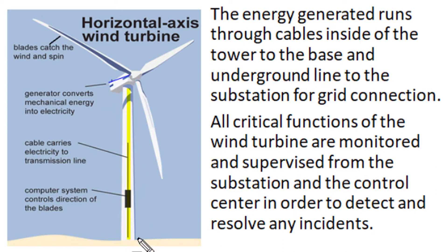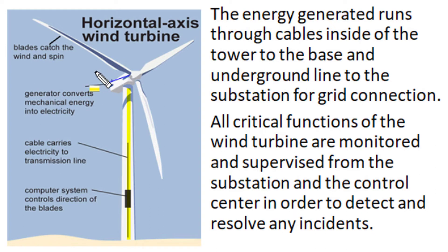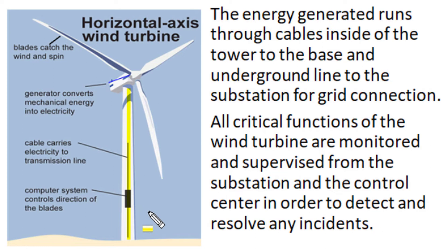The electrical output generated runs through cables inside the tower to the base station, and through underground cables it is given to the substation for grid connection. All critical functions of the wind turbine are monitored by suitable sensors at various positions, and the control center at the bottom of the turbine tower and at the substation automatically controls and regulates all instantaneous conditions of turbine operation by SCADA.